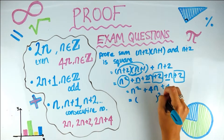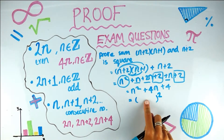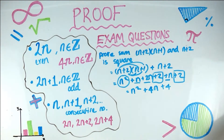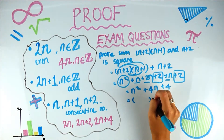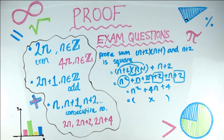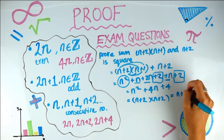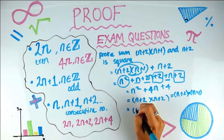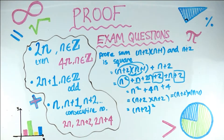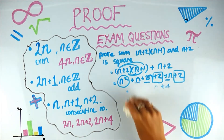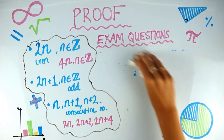We want something we can square, so we want to get this into one bracket. A square is something times itself, so we'll factorize into two identical brackets. In this case we get (n + 2)(n + 2), which is the same as (n + 2) squared. We've shown it's a perfect square. Always think about your end goal: to show something is squared, show it's something multiplied by itself.